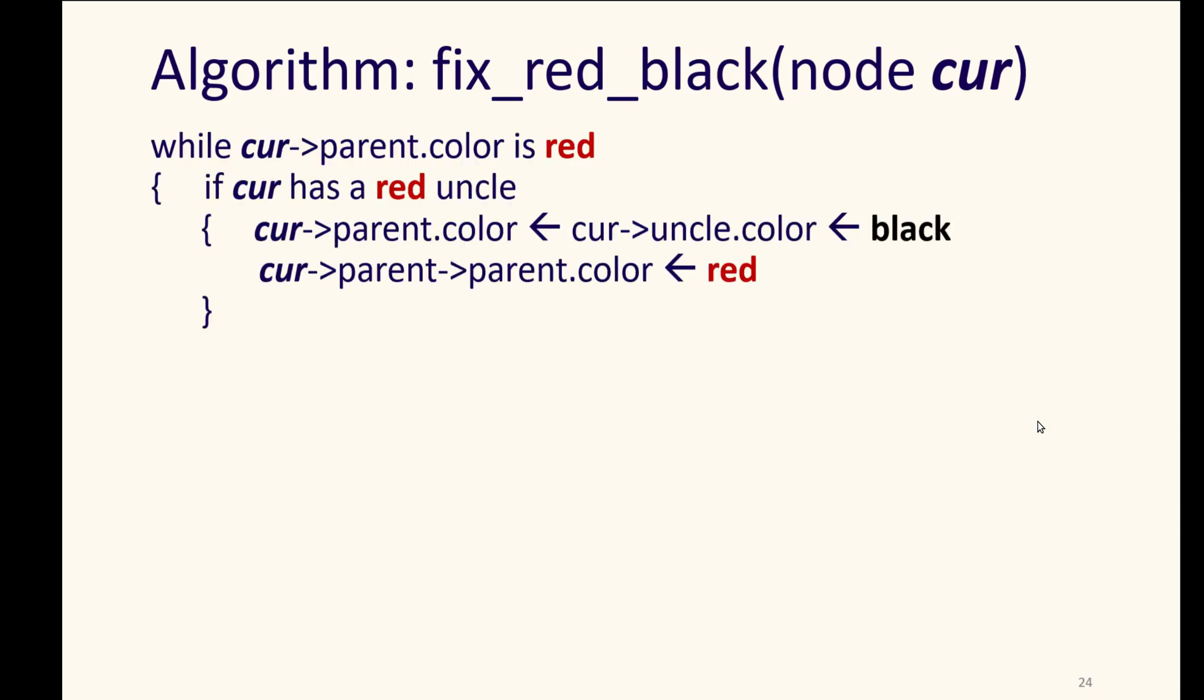So to look a little bit at some code that would fix a red-black tree, if we are from a node current. If current has a red uncle, meaning that its parent's sibling is red.